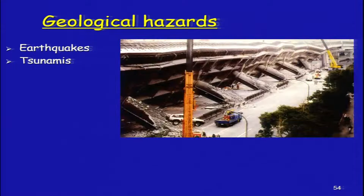In the Himalayan region particularly, we are trying to map similar features where past earthquakes have left their signatures, and we are trying to reconstruct the history of past earthquakes from such features. In terms of geological hazards, we have seen examples of earthquakes, and we also have tsunamis. A very devastating earthquake was experienced in Japan in 1995. We will stop here and continue in the next lecture.